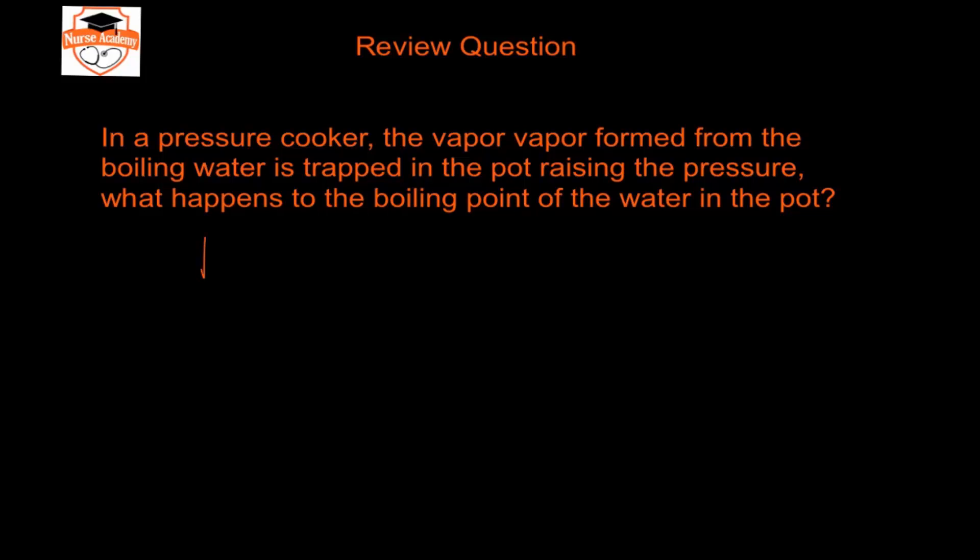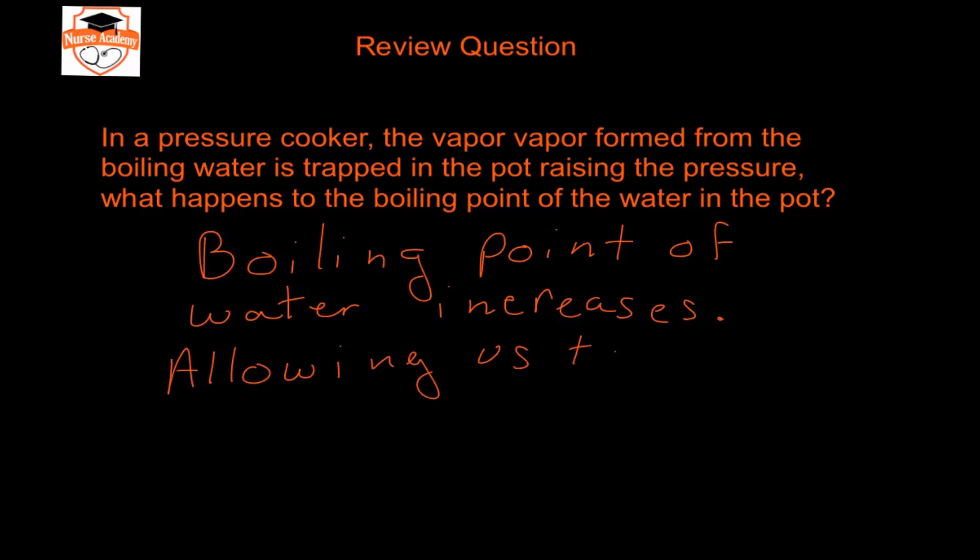In this case, the boiling point of the water in the pressure cooker will go up. The boiling point increases because of the increased pressure, and this allows us to cook at higher heat and thus more quickly. The answer is the boiling point of the water increases.